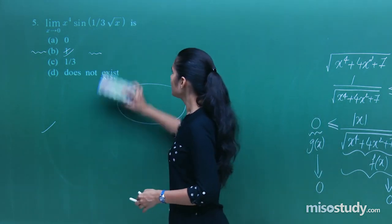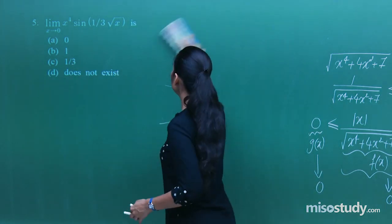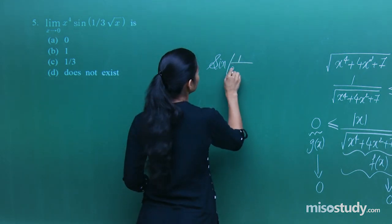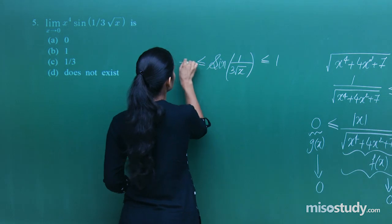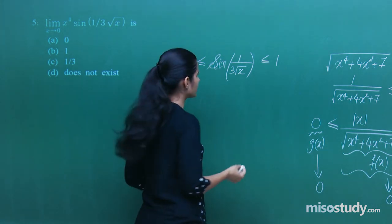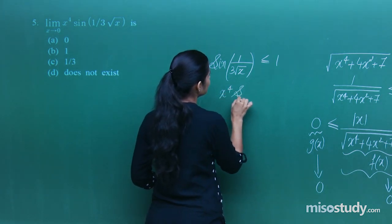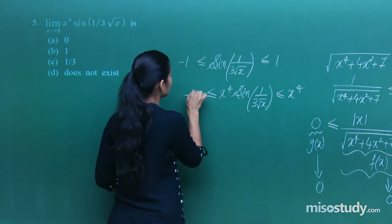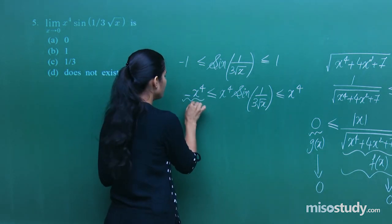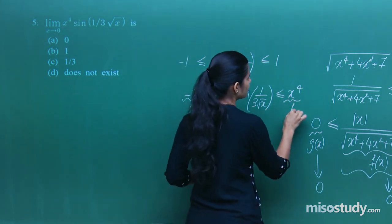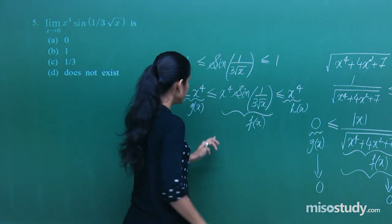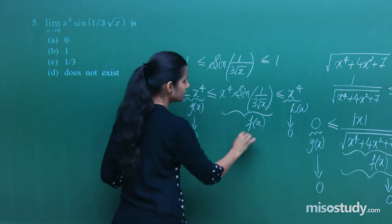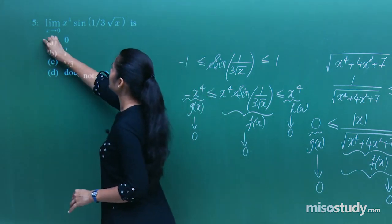The next limit is x⁴·sin(1/∛x). Since sin of any argument lies between −1 and 1, and x⁴ is always non-negative, we have −x⁴ ≤ x⁴·sin(1/∛x) ≤ x⁴. As x tends to 0, both x⁴ and −x⁴ approach 0, so by the sandwich theorem the limit is 0.